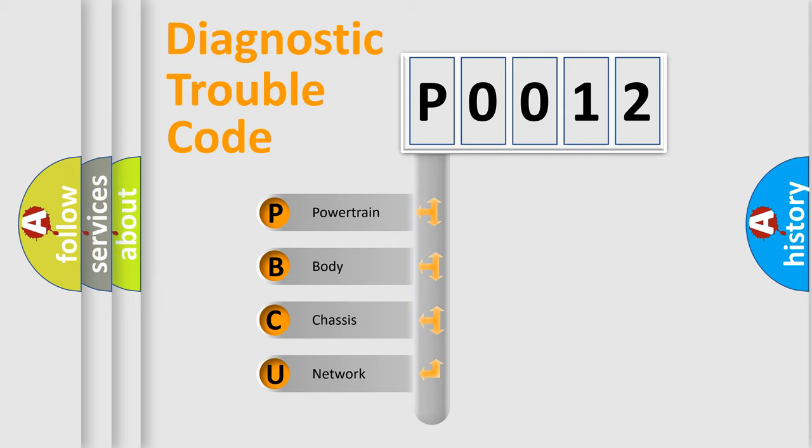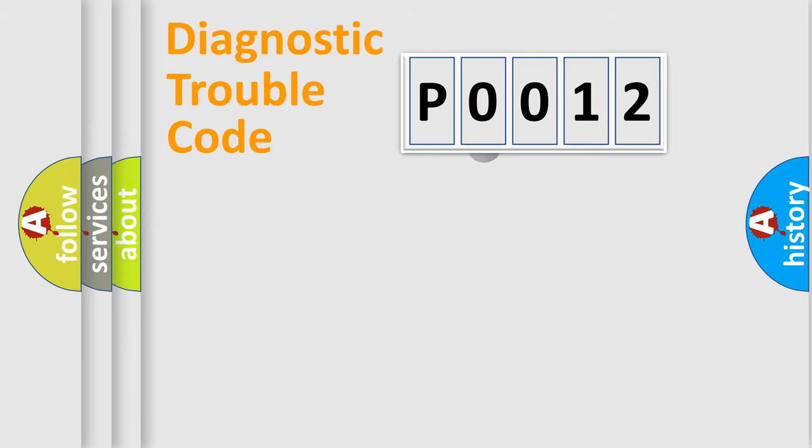We divide the electric system of an automobile into four basic units: powertrain, body, chassis, and network. This distribution is defined in the first character of the code.